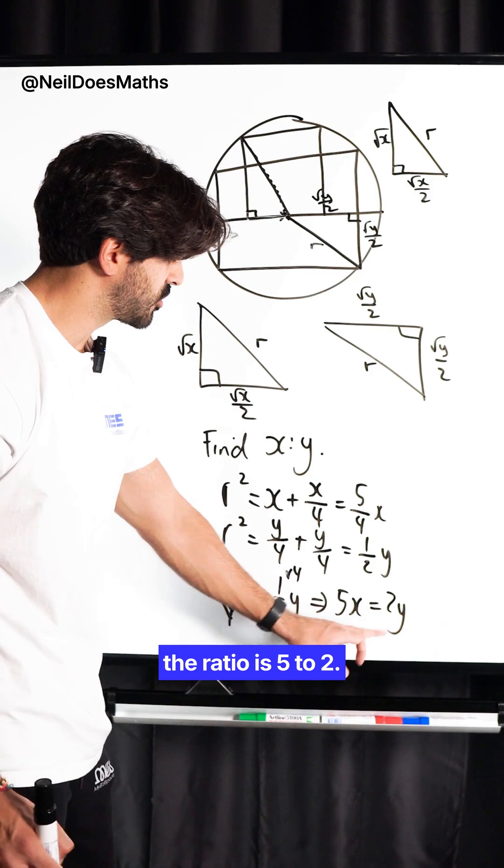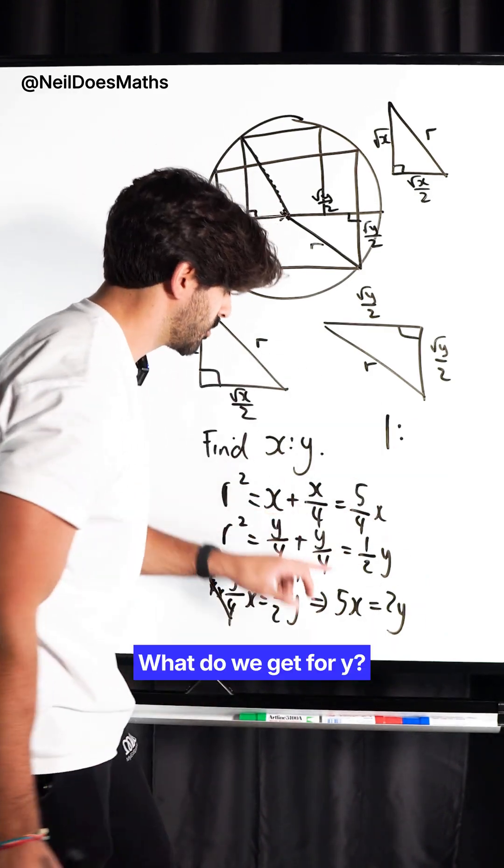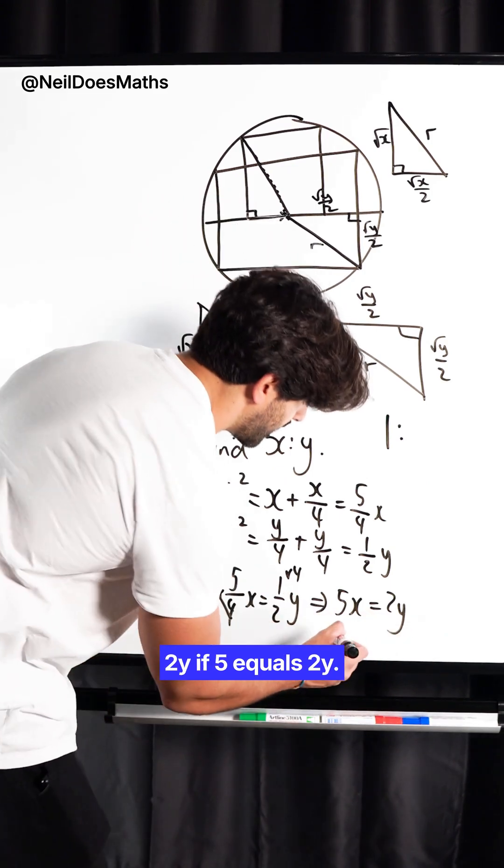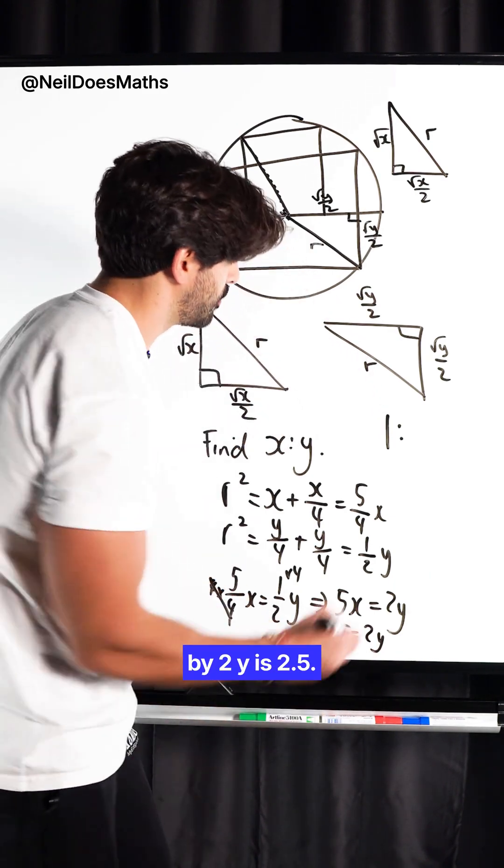Now, that doesn't mean the ratio is 5 to 2. You have to be very careful here. If I sub in X is 1, what do we get for Y? We would get 5 equals 2Y. If 5 equals 2Y, if you divide by 2, Y is 2.5.